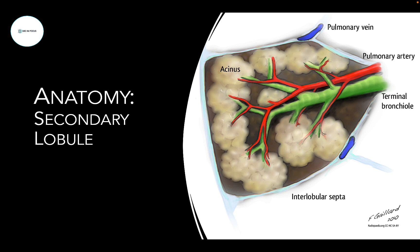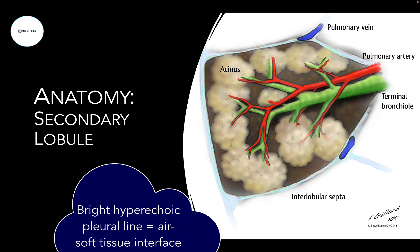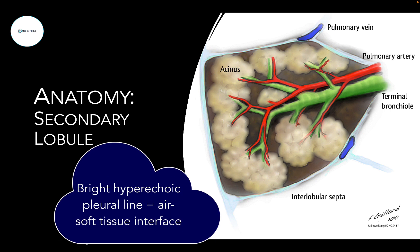In a normal aerated lung, the ultrasound beam doesn't penetrate beyond the pleura. Note that while we refer to the bright white line we see as the pleura line, it's really only the soft tissue-air interface that creates that hyperechoic line — the normal pleural tissue is actually too thin to resolve. When the pleura is pathologically thickened and ultrasound is able to resolve it, the pleura actually appears darker and relatively hypoechoic.